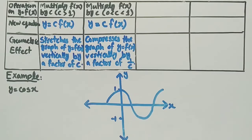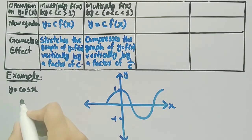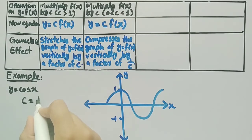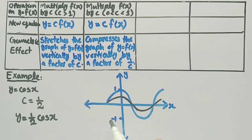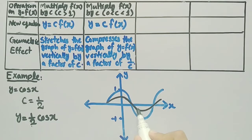Now we will apply this second operation on the graph of y = cos(x). If we consider c between 0 and 1, let's say c = 1/2, then the new function will be y = (1/2)cos(x). The graph in black is the graph of y = (1/2)cos(x). The difference is that the graph of (1/2)cos(x) is compressed vertically by a factor of 1/2 when compared to the graph of cos(x).